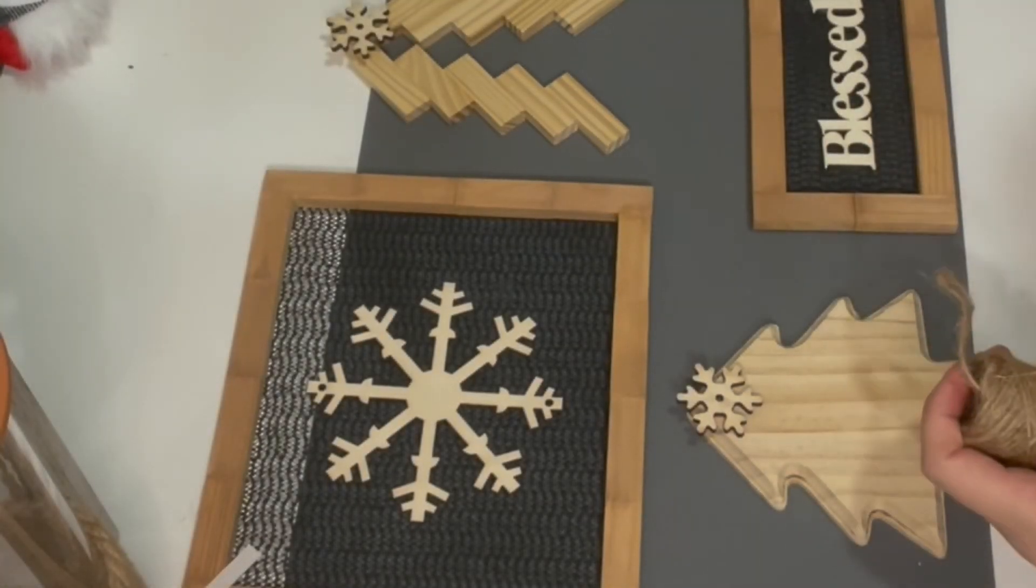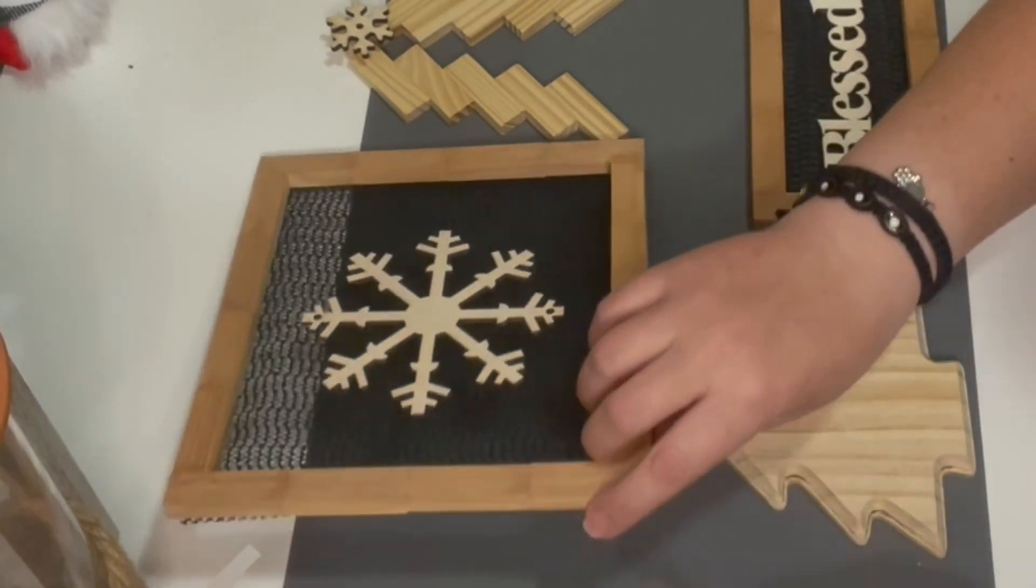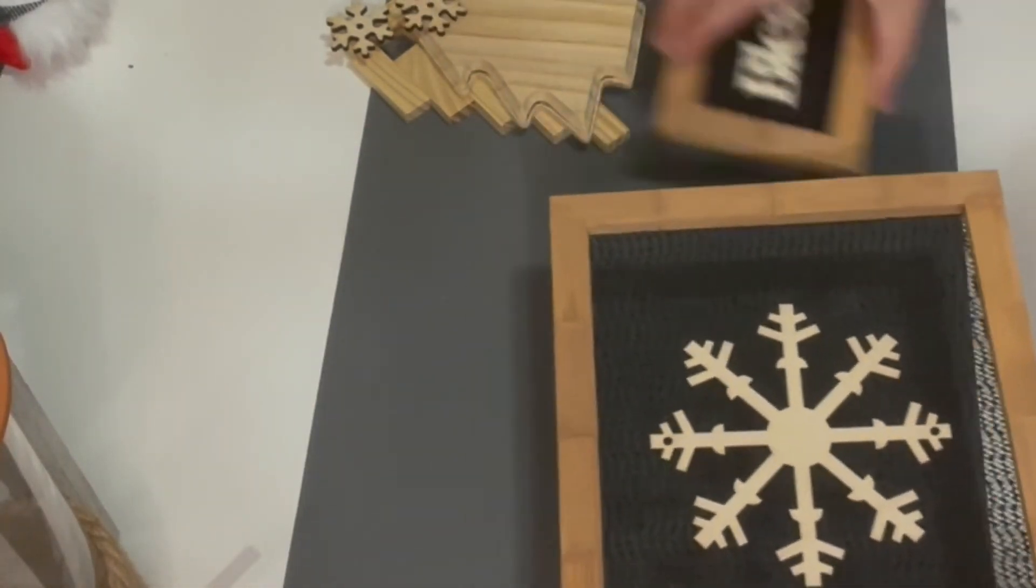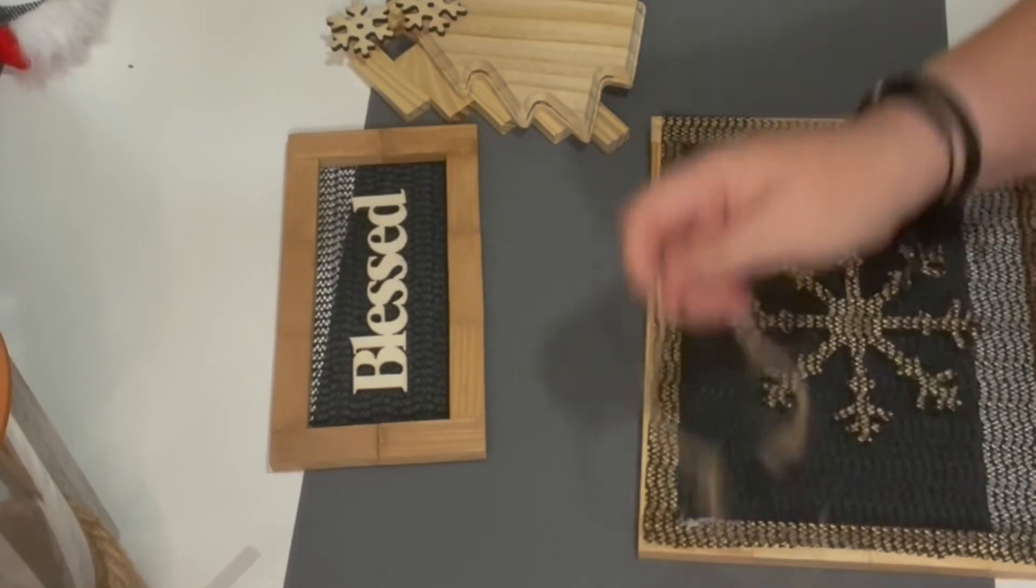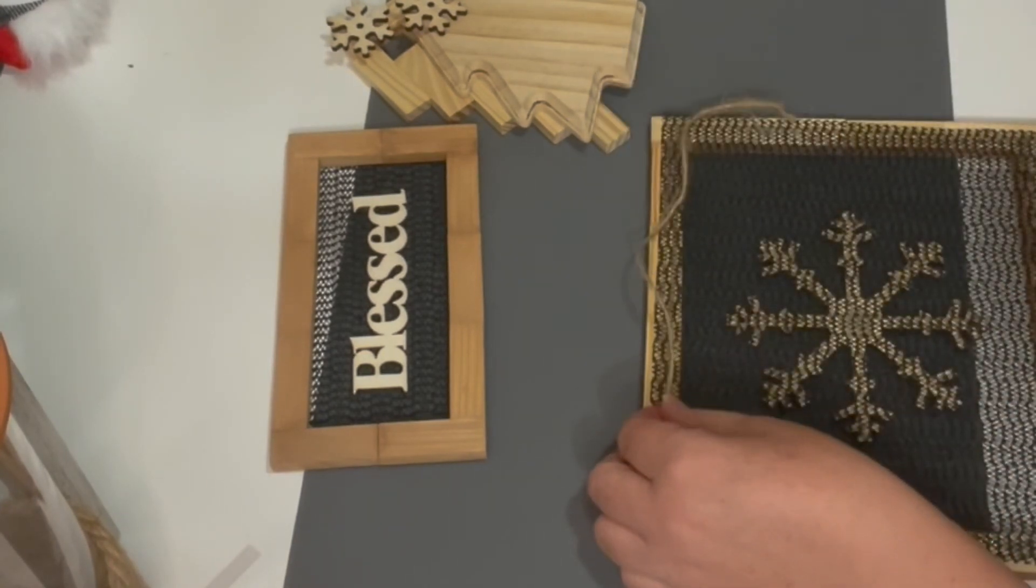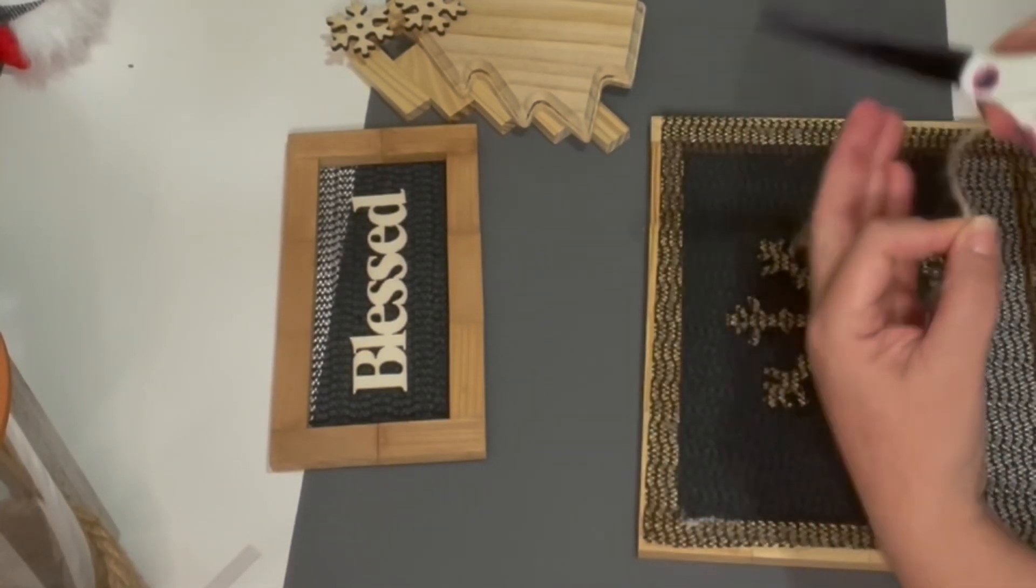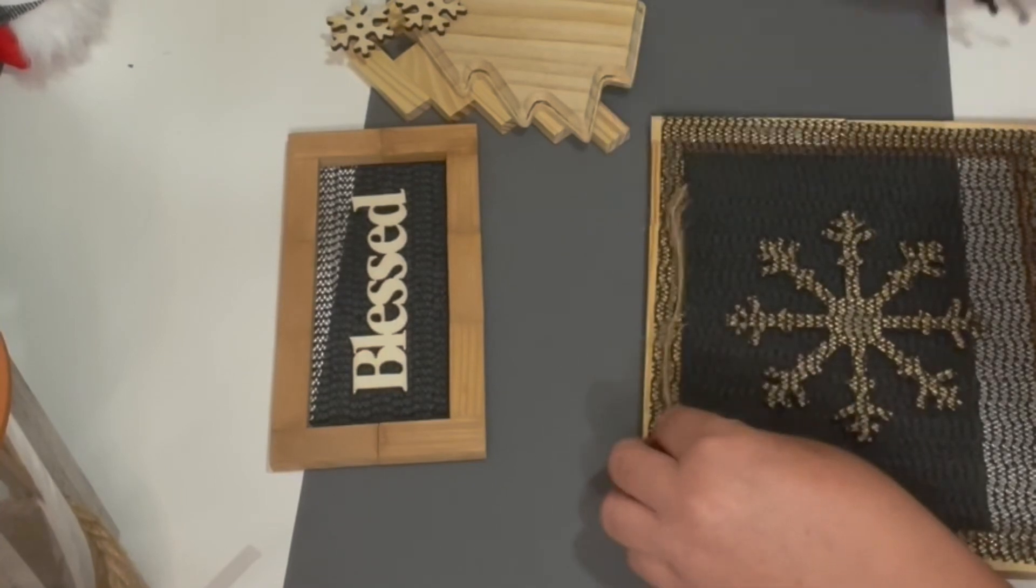This is what they're going to look like after I hang them up here in my little corner. So therefore I need to add a piece of jute string in the back. Make sure it doesn't show. I want a flawless hanging from these pieces, and they turned out really cute.